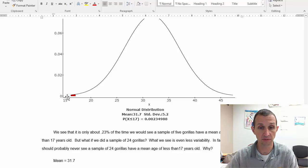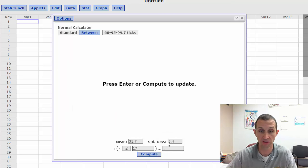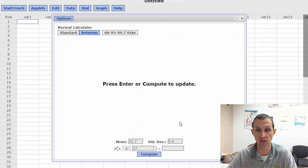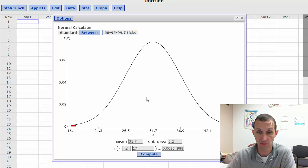Well the idea here is you would actually put that standard deviation in and it becomes a much smaller percentage. So let's go back to StatCrunch and let's go ahead and put in the 5.2. And now when we compute what you'll see is there's your 31.7 in the center but 17 is now way at this left hand side and the probability has gotten much smaller. For all five gorillas to die so that the average age of all five of them was less than 17 is a tiny percentage.